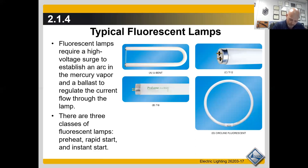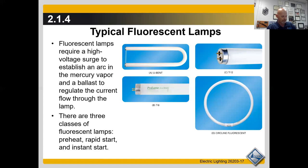Instant start lamps have a single pin at each end — remember that. Moving on to HID: these are compact fluorescent and classic bulb-shape fluorescent types, along with tombstone lamp holders. Single pin and two-pin configurations exist.